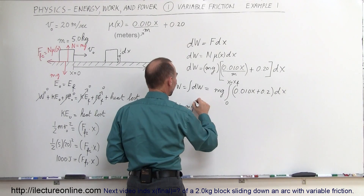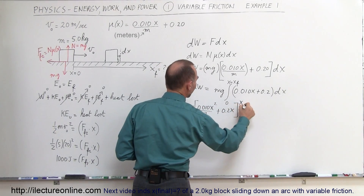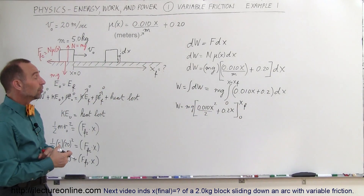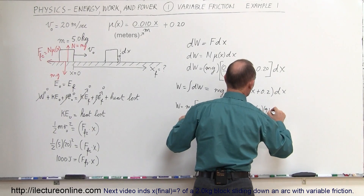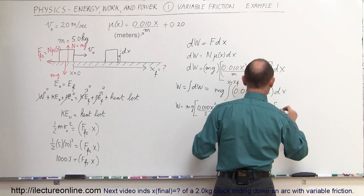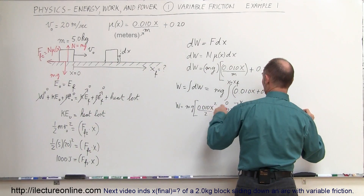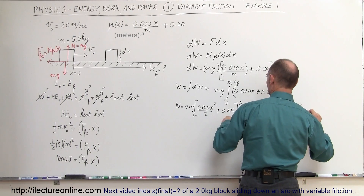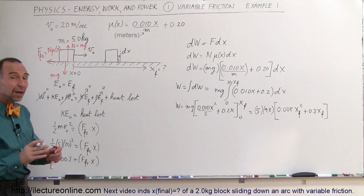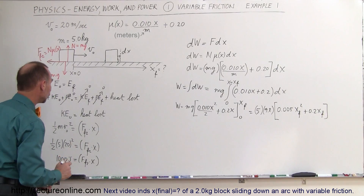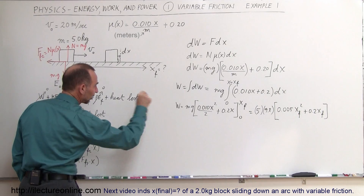The work done to overcome friction equals mg times [0.010x² divided by 2 plus 0.2x], evaluated from 0 to x final. Plugging in numbers: mg is 5 times 9.8 = 49. So this equals 49 times [0.005 x_final² + 0.2 x_final], since 0.010 divided by 2 is 0.005. That is the amount of work done to overcome friction, and we know this equals 1000 joules.